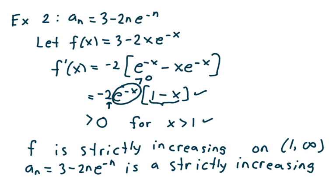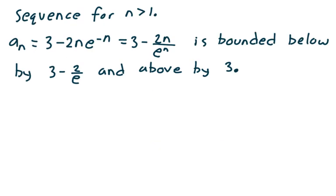So f is strictly increasing on the open interval from 1 to infinity. Therefore, a sub n, which equals (3 minus 2n) e to the negative n, is a strictly increasing sequence, and this holds for n greater than 1.